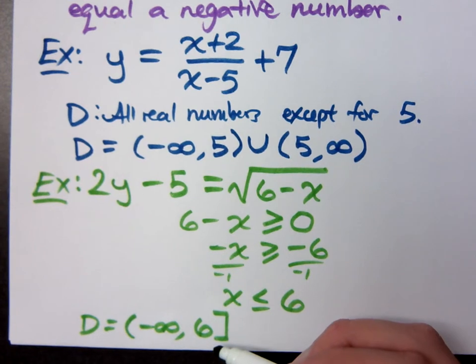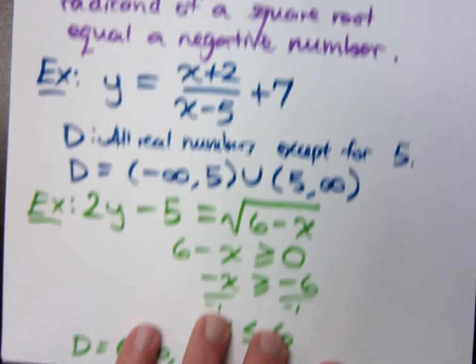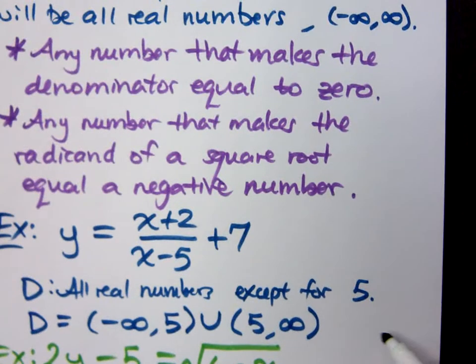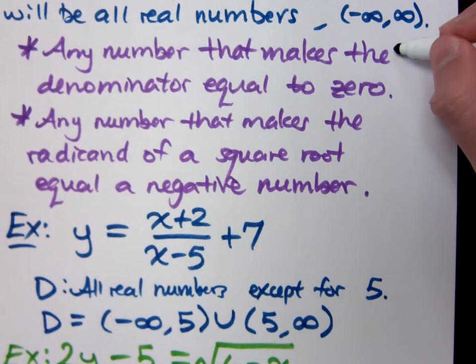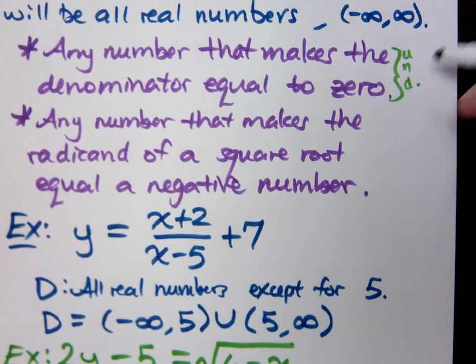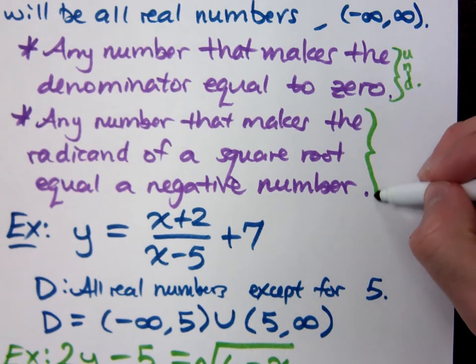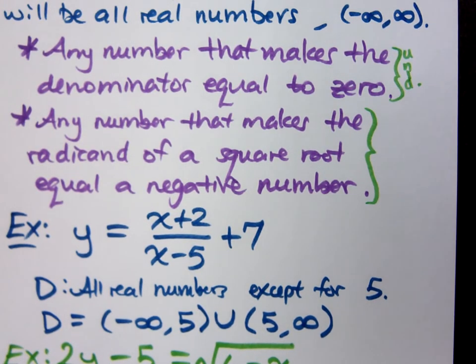So the two main things we're looking for right now, as far as what can restrict our domain, is what makes the denominator equal to zero, because that means the expression is undefined. What happens if the square root has a negative radicand? What kind of result do you get there?